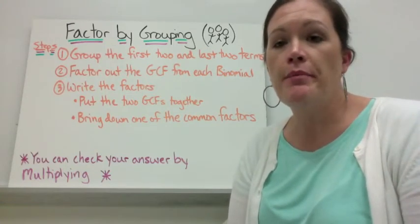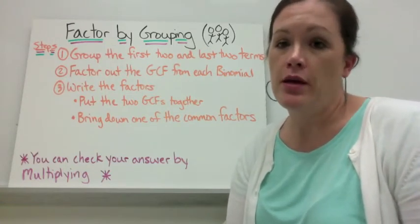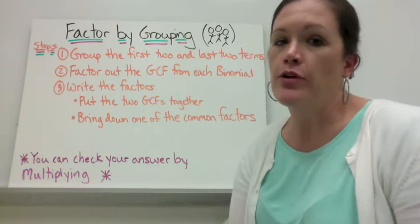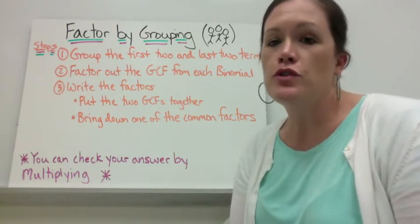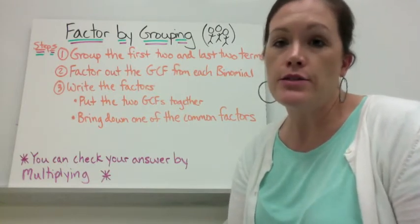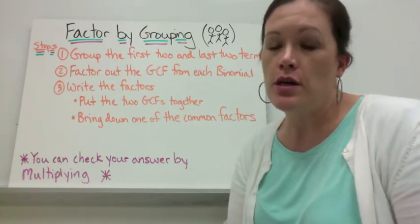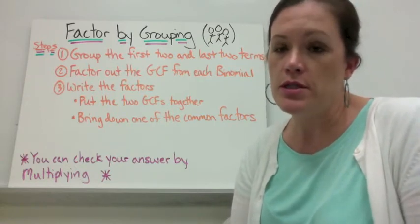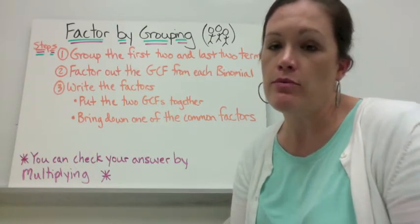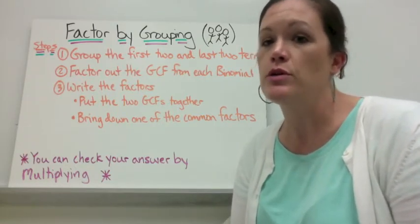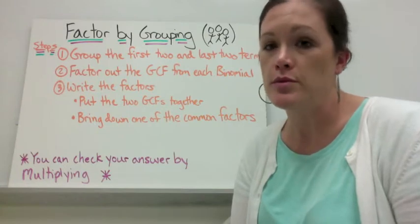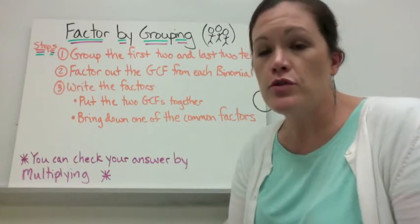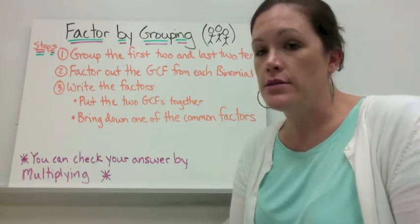Let's talk about factoring by grouping. The steps for factoring by grouping are to first group the first two and the last two terms. Usually you're going to see polynomials with four terms, but traditionally you'll see ones with four terms that need grouping. Group the first two and group the last two.